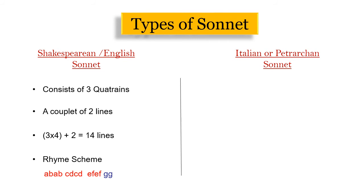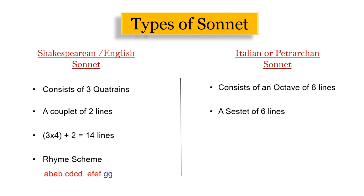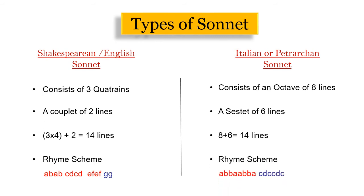In the Italian sonnet there are 8 lines called the octave, and then 6 lines called the sestet. The ninth line is called the turn or volta. The octave presents the problems, and 8 plus 6 lines equals 14 lines. The rhyme scheme is ABBA, ABBA, CDC CDC — and sometimes CDE, CDE.